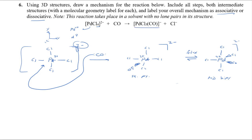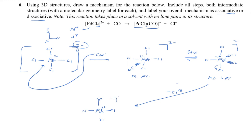Looking at the product, we need to lose one chloro to get to the trichloro product. One chloride leaves — minus Cl⁻. We return to square planar palladium(II) with the carbonyl and three chloro ligands. Two-plus palladium with three negative chlorides gives an overall 1− complex. This whole process is an associative mechanism — the first and rate-determining step was association.